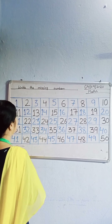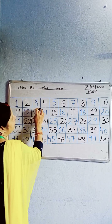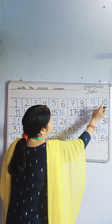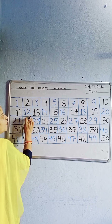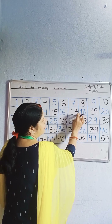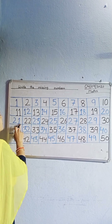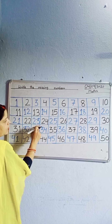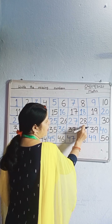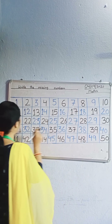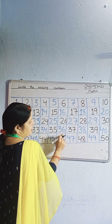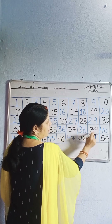So learn it: 1, 2, 3, 4, 5, 6, 7, 8, 9, 10, 11, 12, 13, 14, 15, 16, 17, 18, 19, 20, 21, 22, 23, 24, 25, 26, 27, 28, 29, 30, 31, 32, 33, 34, 35, 36, 37, 38, 39, 40.